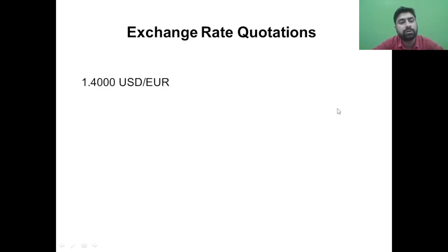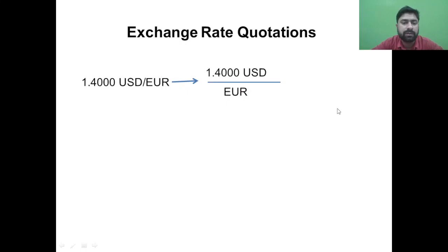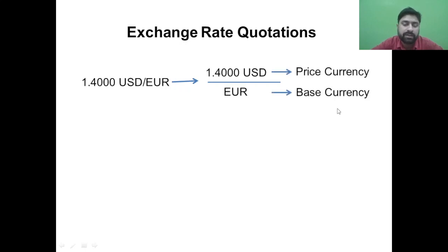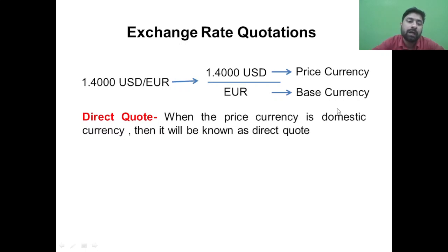This quotation says that 1 euro equals 1.400 USD. We can write this in equation form — we have segregated the numerator and denominator — but the meaning remains the same: for 1 euro you can get 1.400 USD. The currency in the numerator is known as the price currency, and the currency in the denominator is known as the base currency.